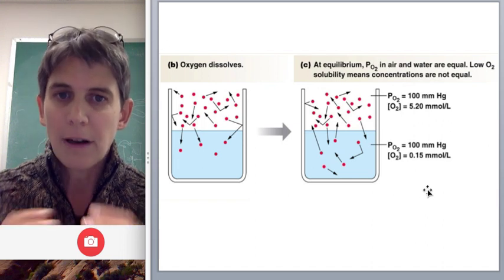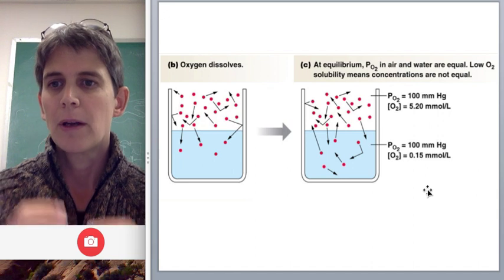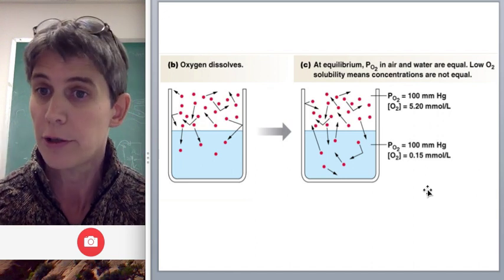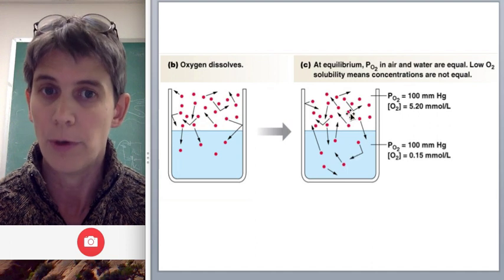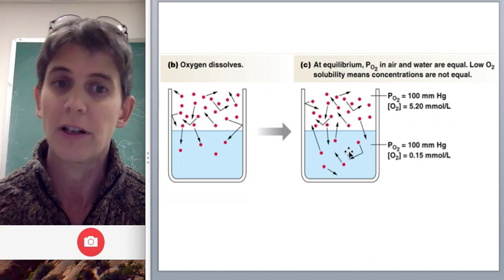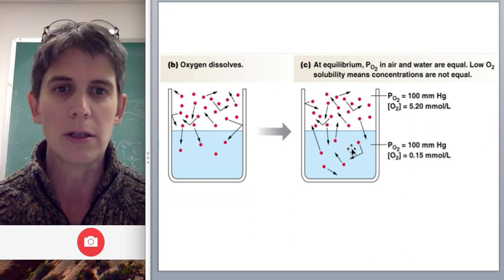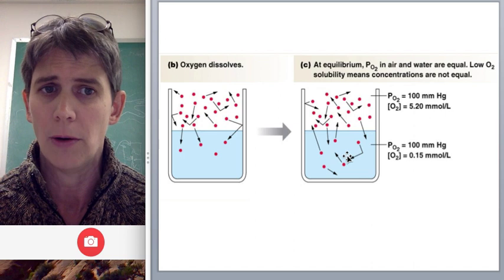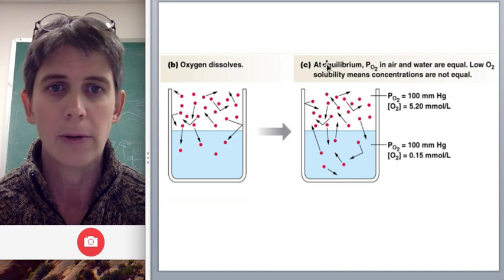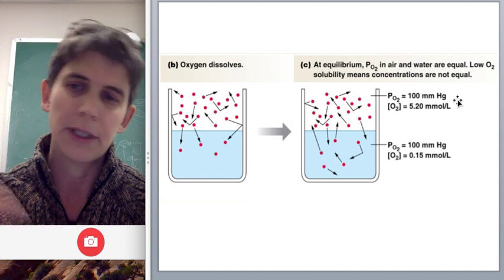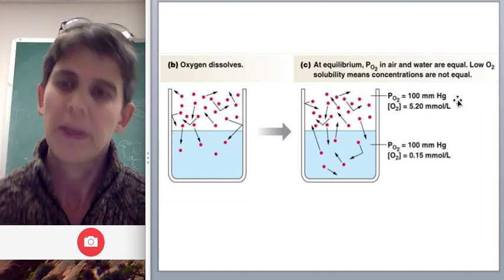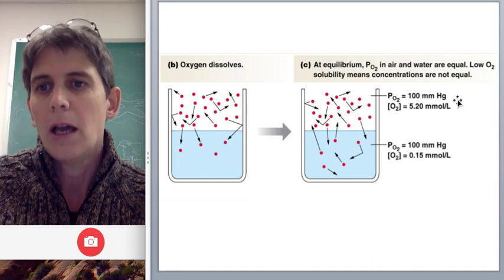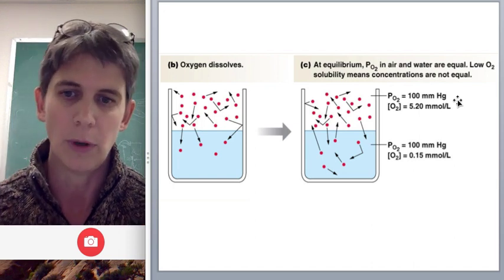Because of this solubility difference, we have to use partial pressure because we can use partial pressure to correctly predict how oxygen is going to move between these two solutions. But we can't use concentration. If we just look at the concentrations here, it looks like we would expect more oxygen to go into solution. But here we are at equilibrium. The partial pressures have equalized, but the concentrations are not the same. That's why we have to use partial pressure because it's the thing that's really going to tell us in which direction and how fast will oxygen move.